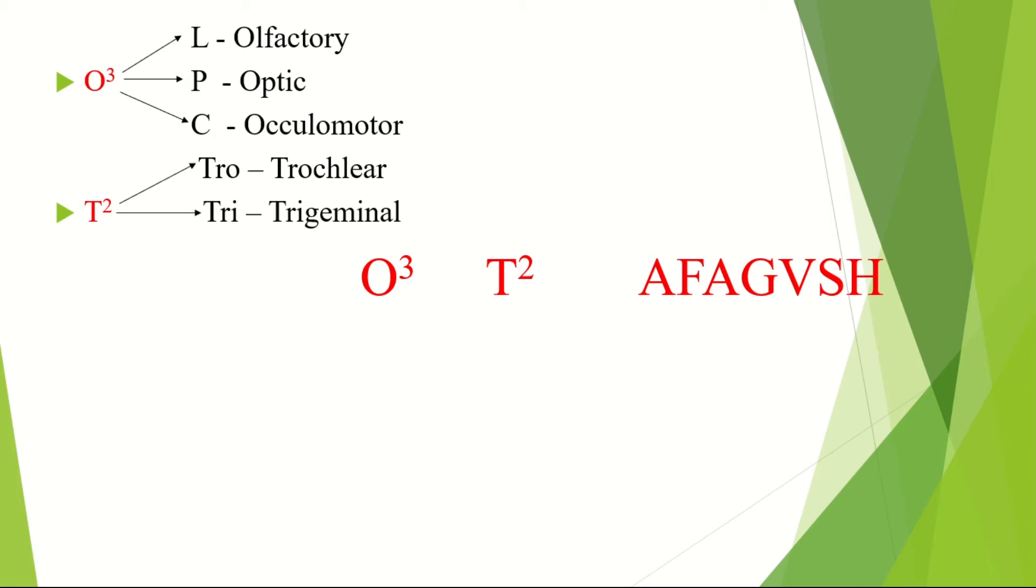Now coming to FAGAVIS: A for abducens, which is cranial nerve 6, F for facial, A for auditory, most commonly known as vestibulocochlear nerve. Now if you're getting confused between these two A's, then remember B comes before U, so abducens comes before auditory.